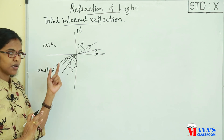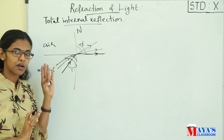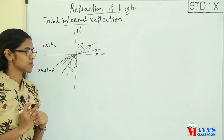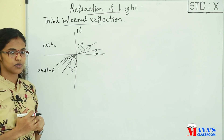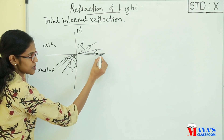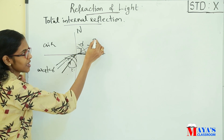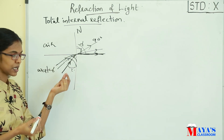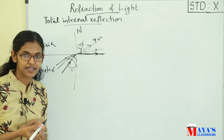At a particular angle of incidence, we have to adjust the angle of incidence such that the refracted ray is parallel to the surface of separation. That angle of refraction is 90 degrees. That particular angle of incidence is the critical angle.